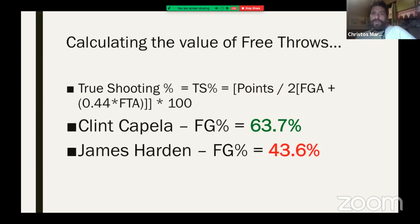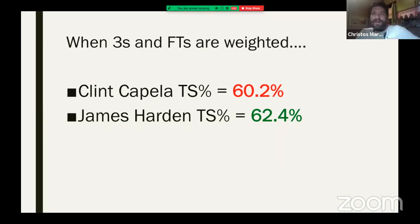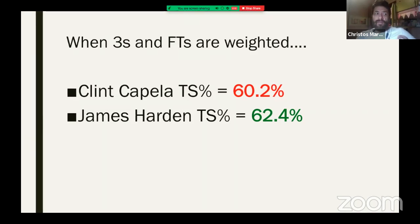So which number is true — this number or that number? The truth is in the second number, because true scoring percentage calculates the fact that players should score not only from the field but also from the free throw line. And when they shoot from the field, threes have better value than twos.